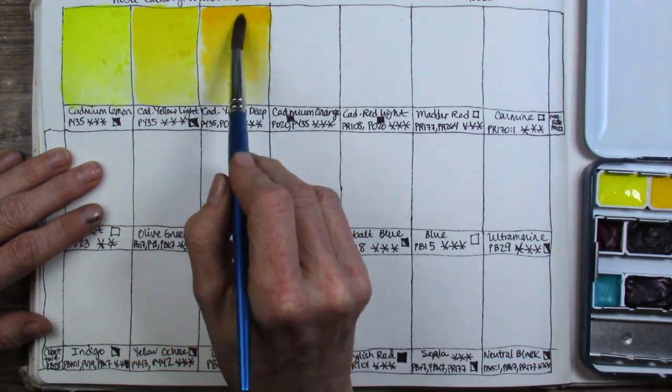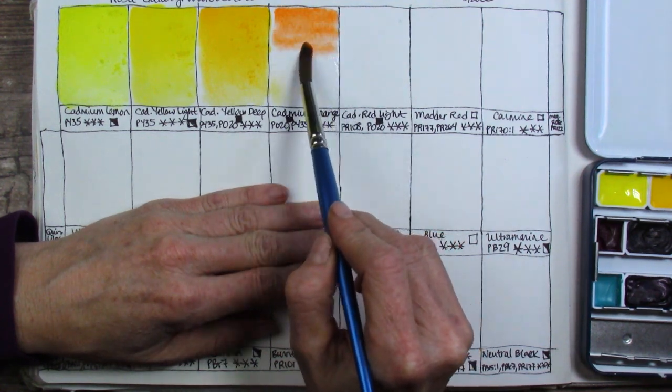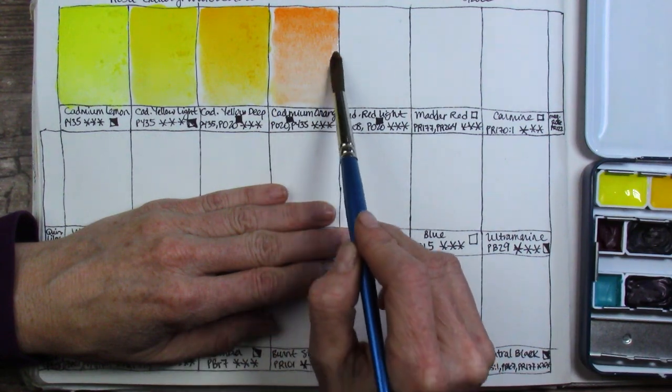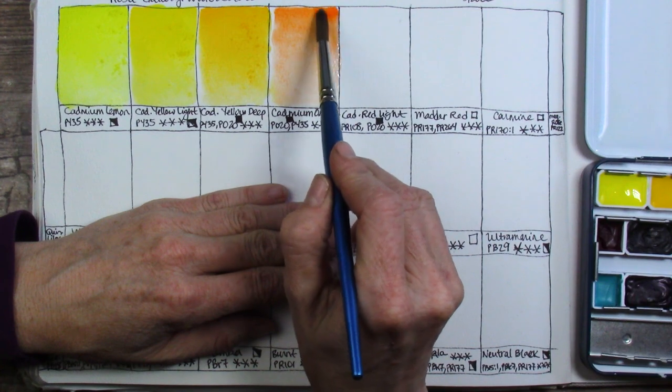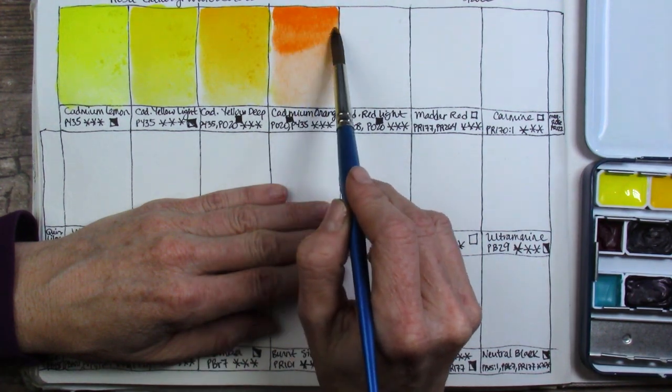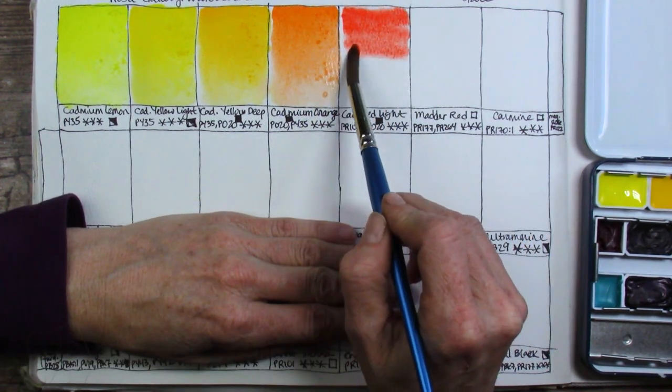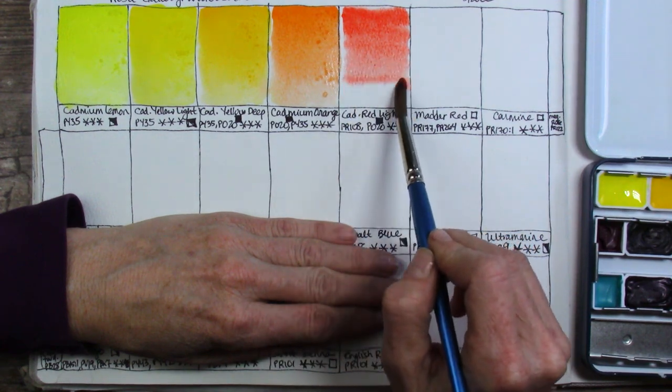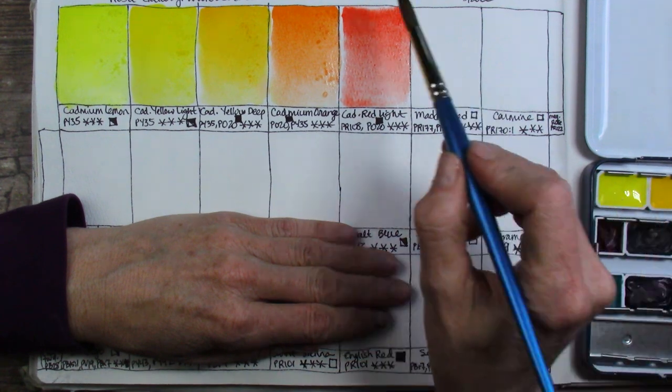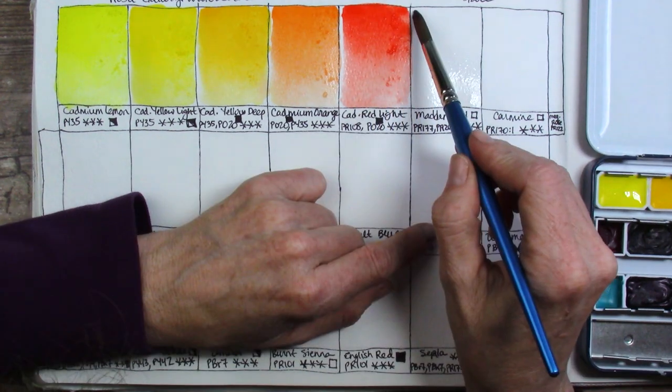That one will be followed up by the cadmium orange which is PO20 and PY35. Again three star lightfast and this label says that it's opaque. I did use this in my painting that you'll see later in this video and it's quite pretty although I do follow that up with the cadmium red light which you're going to see next here which is PR108 and the PO20 again and three star lightfast rating. They say this one is opaque. I do find cadmiums to be fairly opaque in my experience anyway when you're using them thickly so that seems accurate.